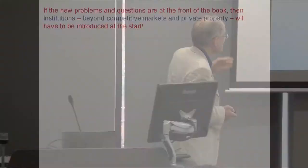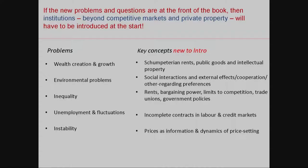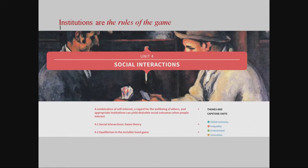If these are the problems, we're going to have to have some new concepts — and look how many of them have to do with institutions. These questions are not going to be answered with a thin view of institutions; they require something a little more elaborated. To do that, in Unit 4 we bring in what's called social interactions — it's about game theory, illustrated by experiments and behavioral economics, where we teach that institutions are the rules of the game.